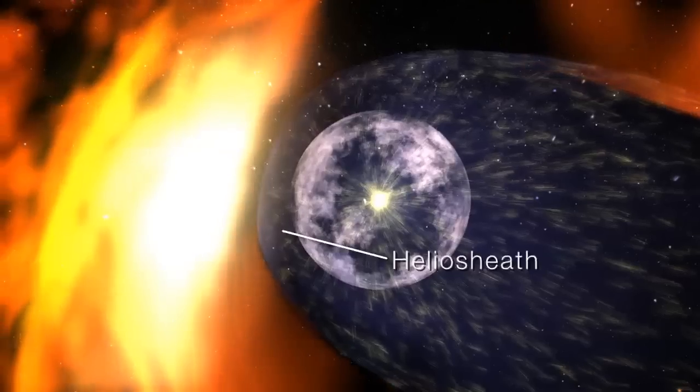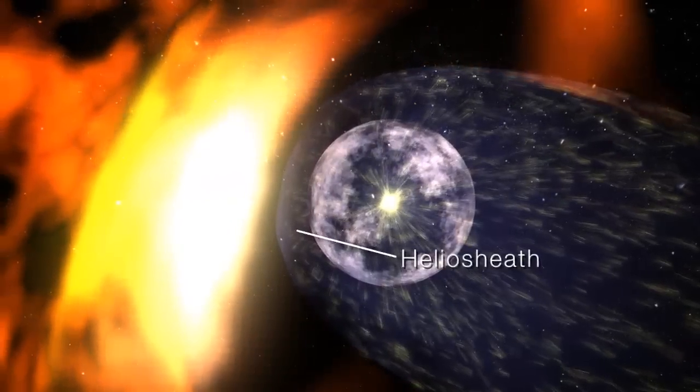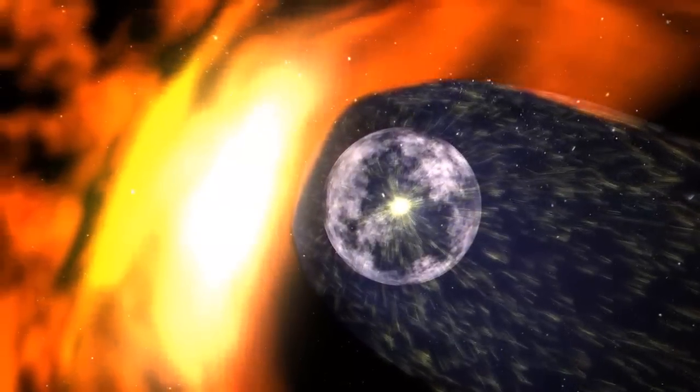Outside this is the heliosheet, where the solar wind slows to a stop, and the magnetic field is bent back by the ionized interstellar wind.